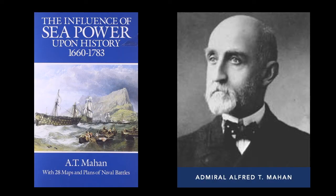In a previous lecture we learned that the year 1890 was a turning point in American history, because according to the American census that year, there was no more frontier. The goal of manifest destiny — that Americans should rule from sea to shining sea — had been completed. American historian Frederick Jackson Turner argued that the frontier had defined American identity, that being pioneers had defined us, and now that the frontier was gone, we would become physically and morally weak.